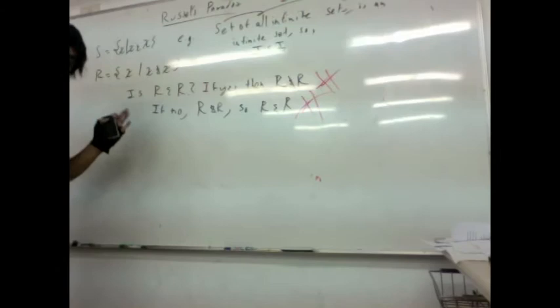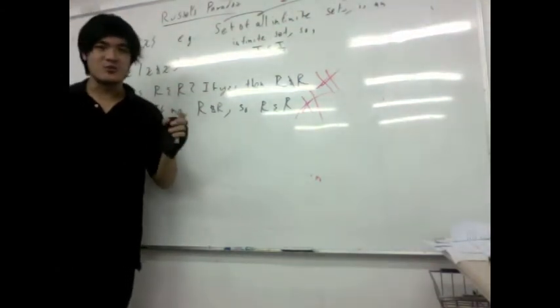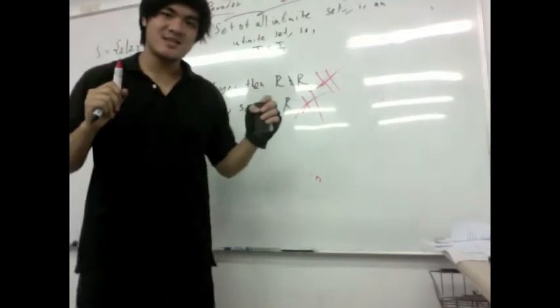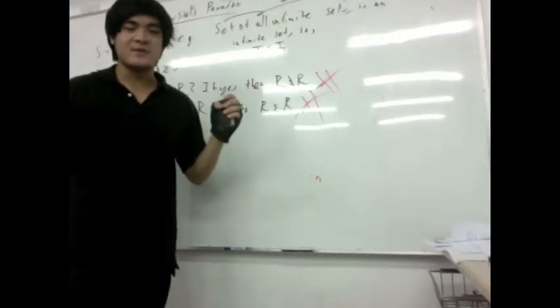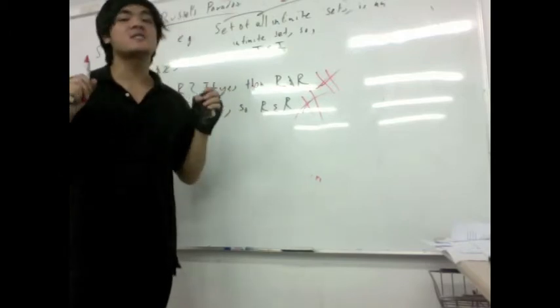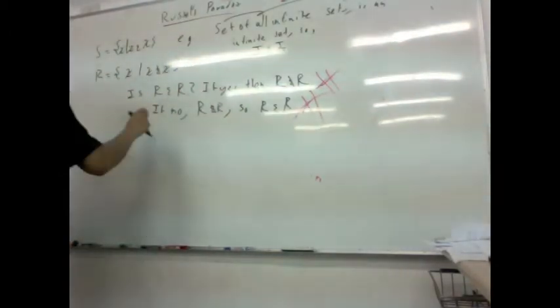So here, this just demonstrates why you cannot have total freedom on any set theory rules. This is why we need axioms.